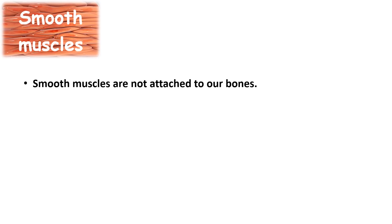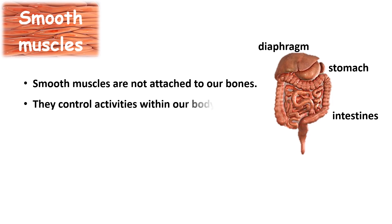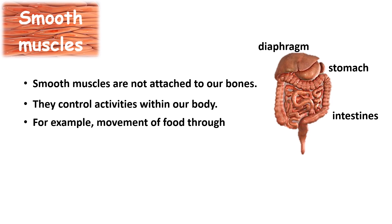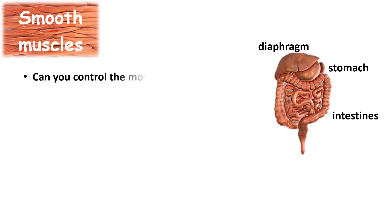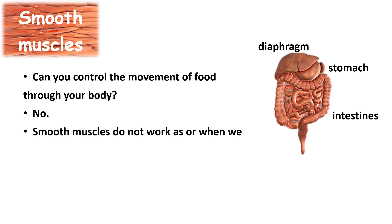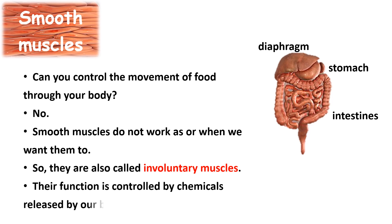Smooth muscles. Unlike skeletal muscles, smooth muscles are not attached to our bones. They are present in the internal organs such as the stomach, intestines, and diaphragm. They control activities within our body. For example, movement of food through the digestive tract takes place due to the action of smooth muscles. Can you control the movement of food through your body? No. Smooth muscles do not work as or when we want them to, so they are called involuntary muscles. Their function is controlled by chemicals released by our body.